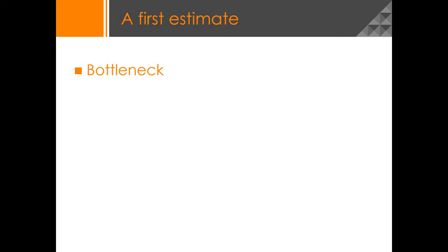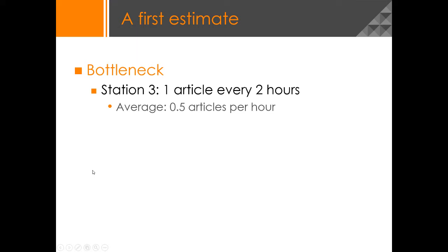Before we work with the simulation model and check how it performs for different values of Kanban, we can do some estimates based on the numbers we already have. First, we have realized that our bottleneck will be Workstation 3, which means that we have an article produced every two hours — a production rate of 0.5 articles per hour.